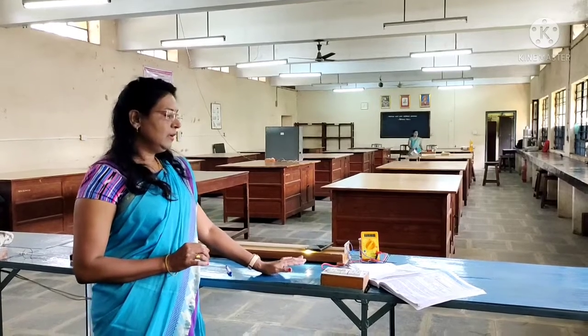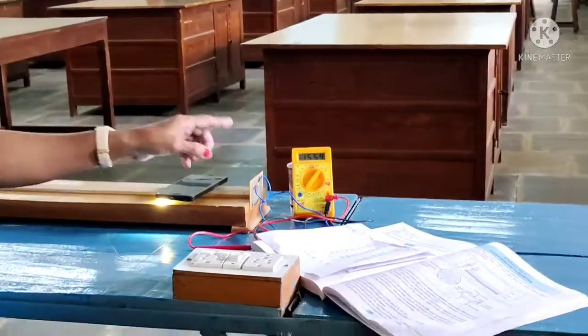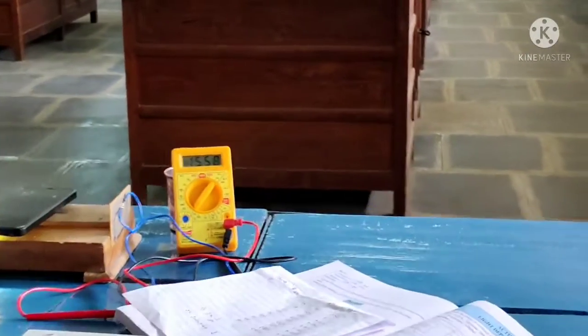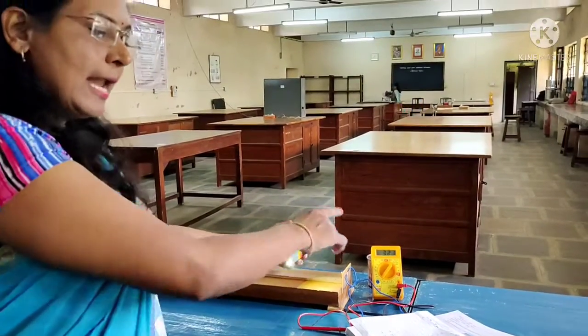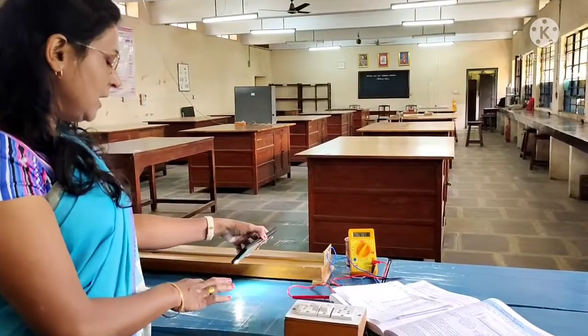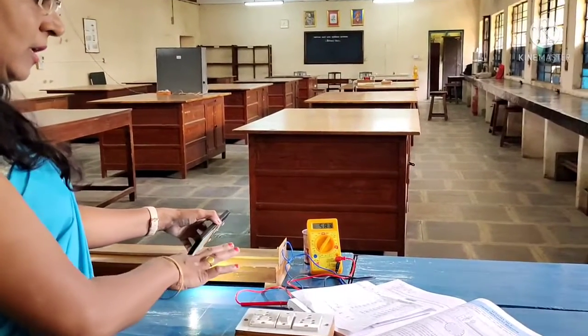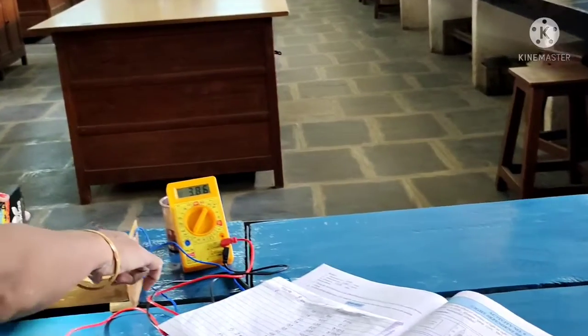Here is activity number 9, the light dependent resistor. You have to study the effect of intensity of light on the light dependent resistor, LDR.